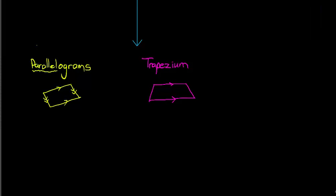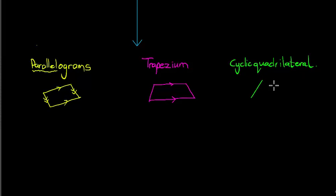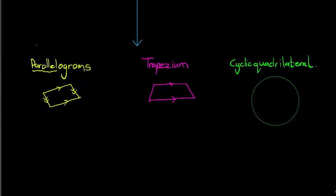Then we have cyclic quadrilaterals. A cyclic quadrilateral has one key property: they are quadrilaterals that fit on a circle. If I draw a circle, any four-sided figure where its corners sit on the circumference of that circle would be a cyclic quadrilateral — 'cyclic' referring to being on a circle.